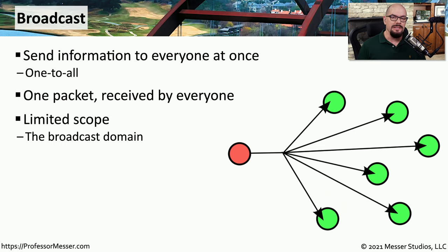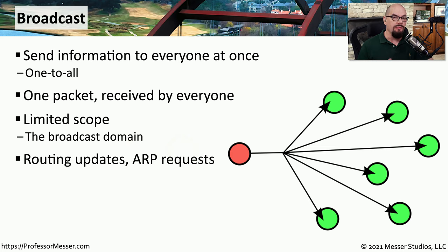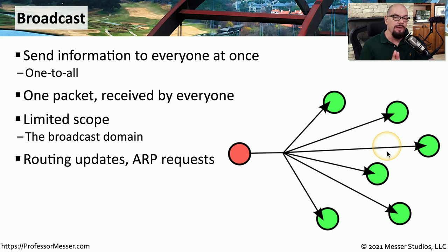We're not able to send one packet to the internet and communicate with every other device on the internet. This range of communication used by broadcasts is called a broadcast domain, and it's usually limited to your local IP subnet. There are a number of routing protocols that rely on broadcast to send updates to all other devices on the network, and if you're using IPv4, ARP requests use broadcasts extensively.